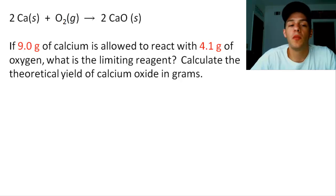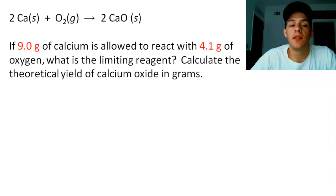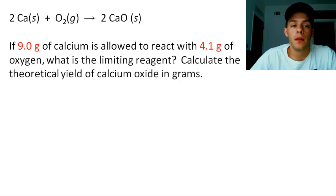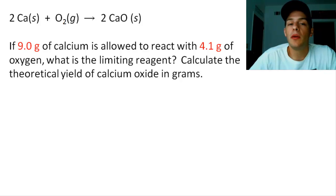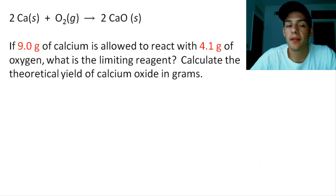This problem is based on a chemical equation describing the reaction between calcium and oxygen to form calcium oxide. It says that if 9.0 grams of calcium is allowed to react with 4.1 grams of oxygen, what is the limiting reagent? We can see that we have more calcium than oxygen by mass, so we might be tempted to say oxygen must be our limiting reagent. But this is not necessarily true because our balanced chemical equation doesn't speak to mass — it's talking about moles.